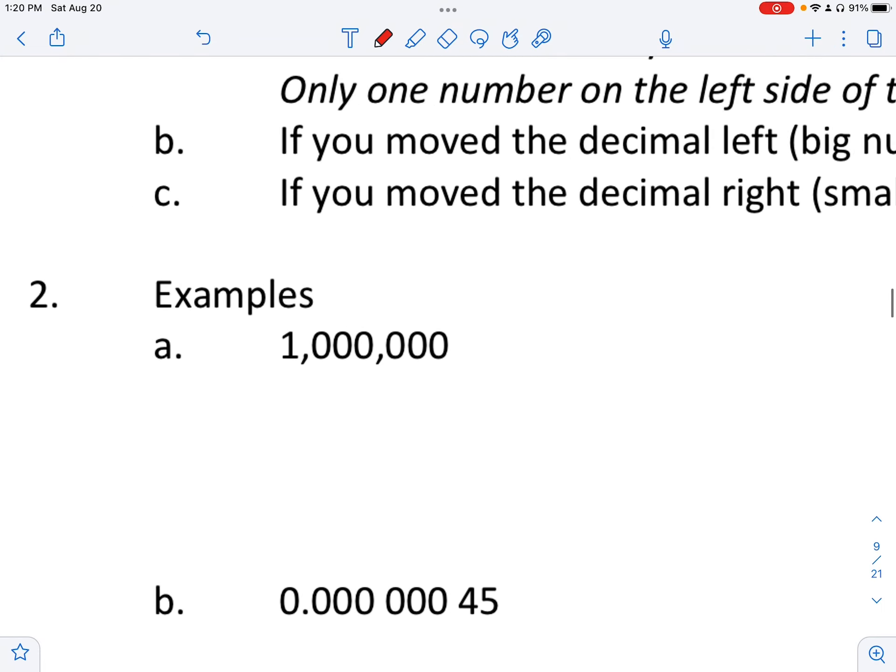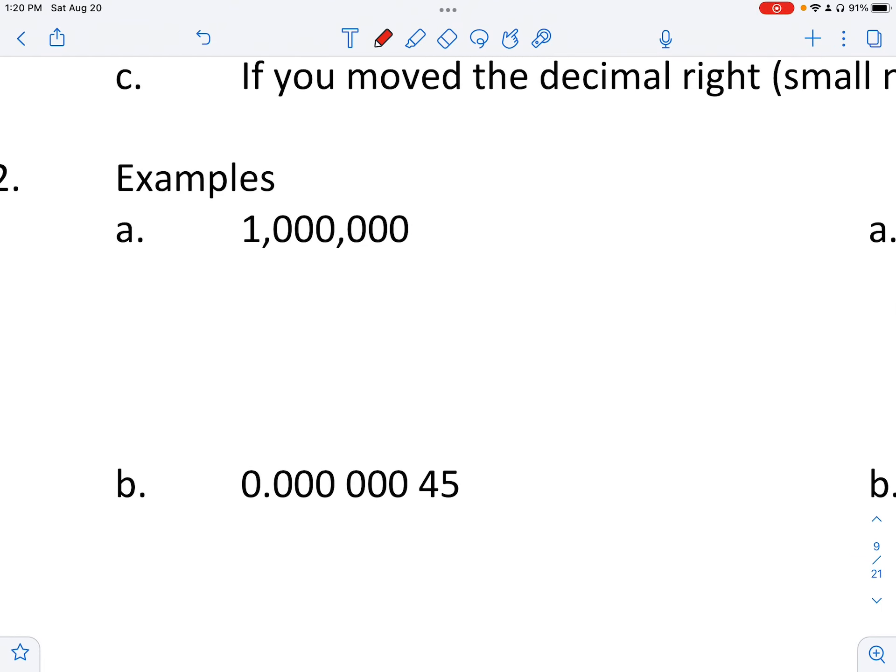So let's start here with one million. Our goal is to get the decimal to be on the left side of only one number. Currently our decimal is right here at the end of that number and we want to move the decimal all the way over here so we only have one on the left side of the decimal. It'd be like 1.0, and then however many spots we moved it: one, two, three, four, five, six. We're going to say times ten to the sixth because we moved it six places to the left.